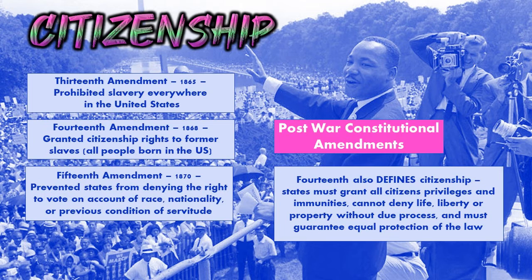The 14th Amendment also didn't go quite far enough because it didn't specifically say that people could vote, so states were not allowing people the right to vote. The 15th Amendment was passed a couple years after that, and it prevents states from denying the right to vote based on race. So three amendments in a five-year period — 13, 14, 15 — make great strides towards legal equality in the Constitution.